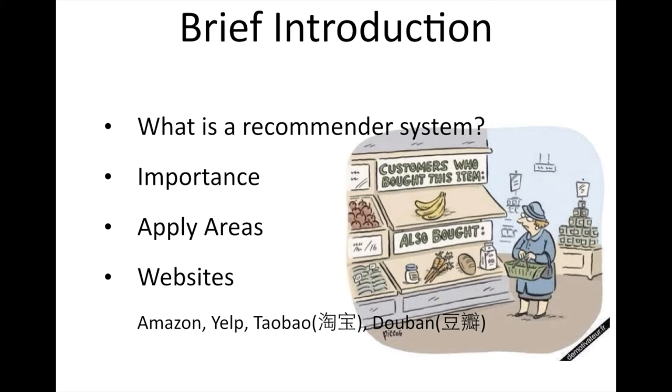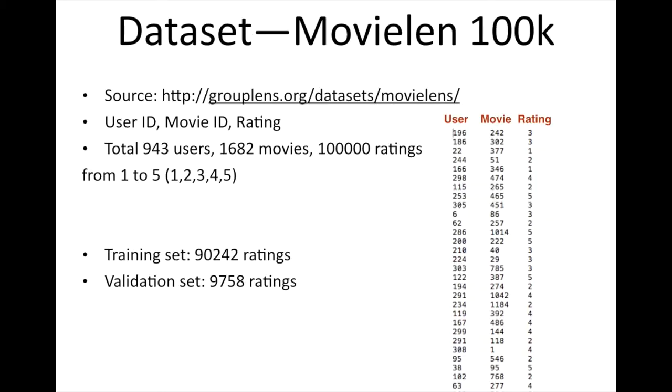It is very important for these websites to have a good recommender system. Now, let's take a look at the dataset. The dataset contains 100,000 ratings from 943 users to 1,682 movies. The ratings are from 1 to 5. I separated the training and validation set, which contain 90% and 10% of the total ratings.